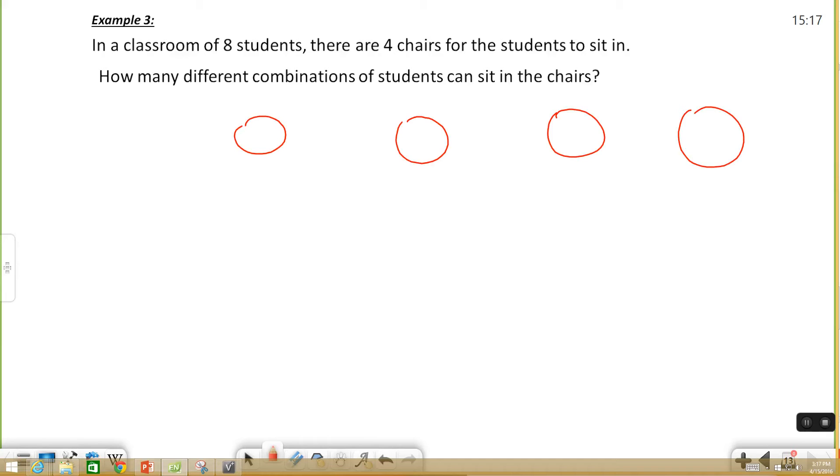First thing you want to think is how many students could possibly fit in this first chair? There's eight different students that could sit there. Okay, what about the second chair? How many students that are left can sit in that second chair? Well there's only seven students left because one of them is sitting in the first chair.